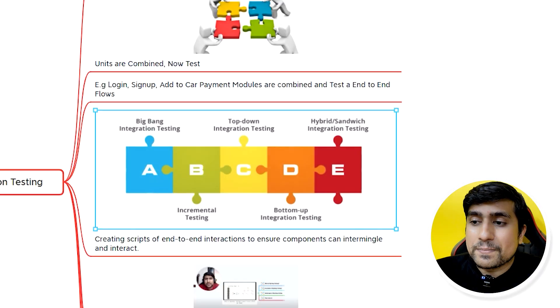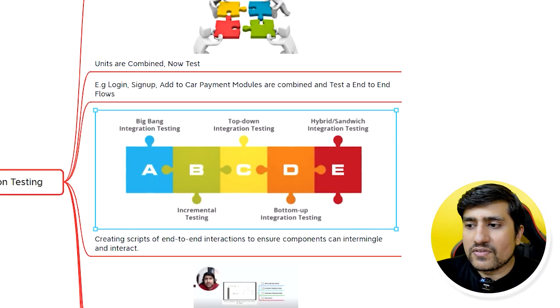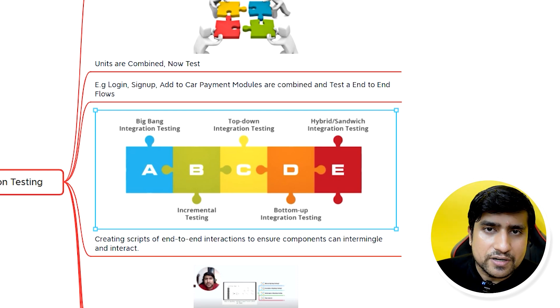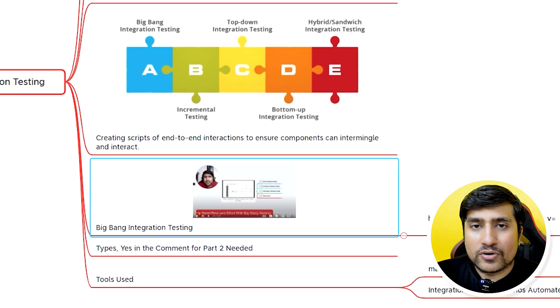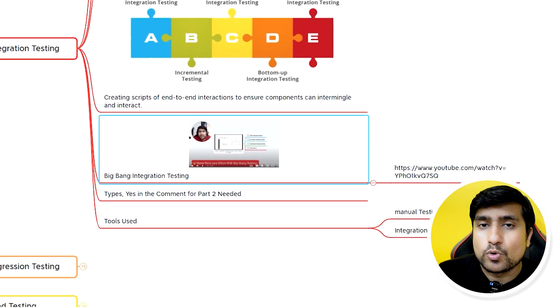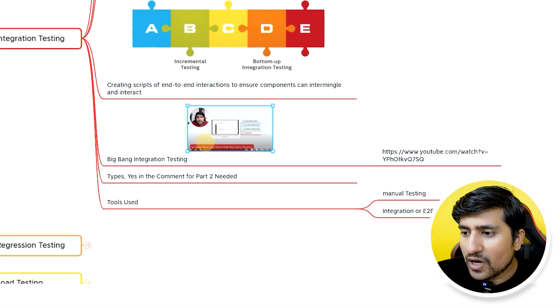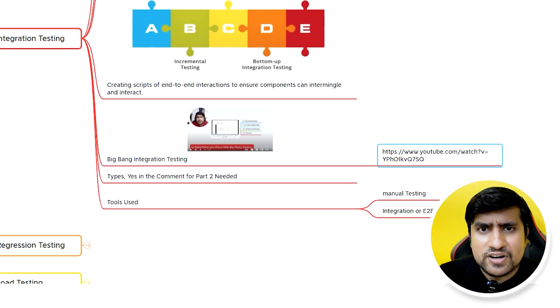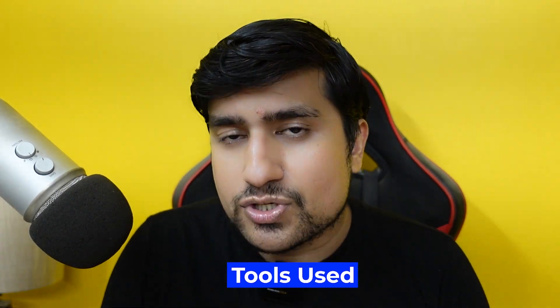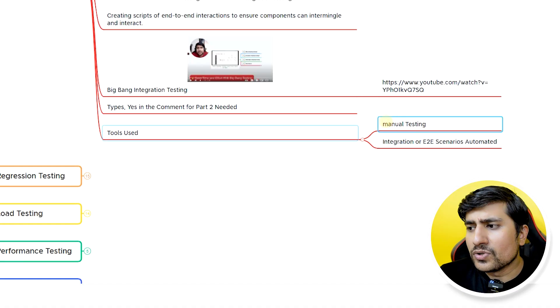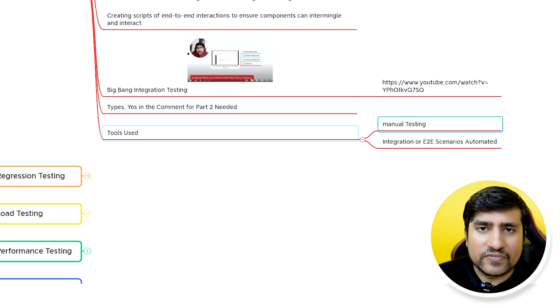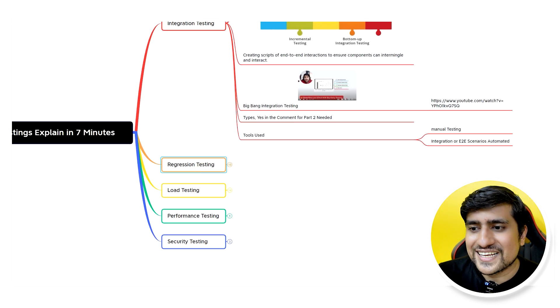There are various types of integration testing available: big bang integration, top-down, incremental, bottom-up, and hybrid. Big bang integration is the most important one for interviews. As for tools, in manual testing we use tools for test planning as well as Jira for bug reporting and similar tasks.